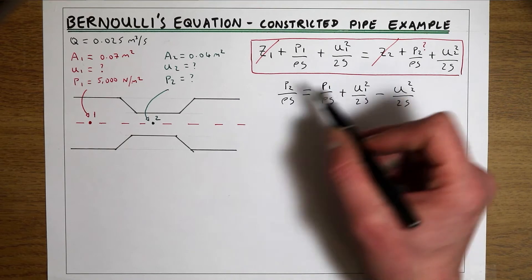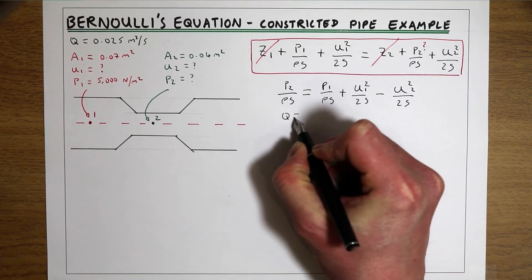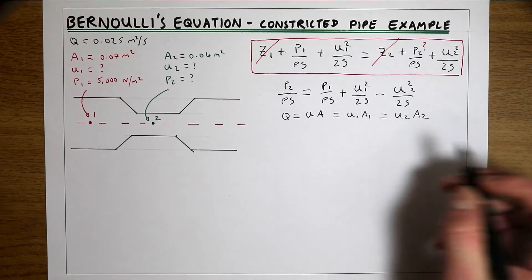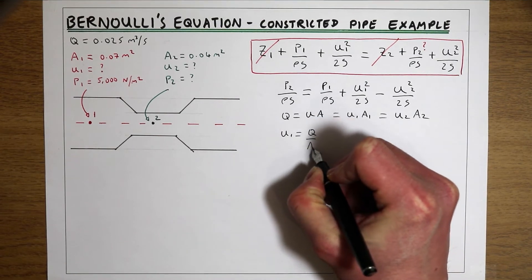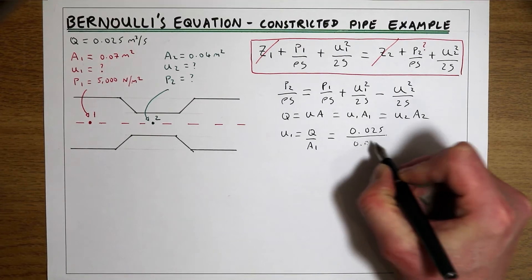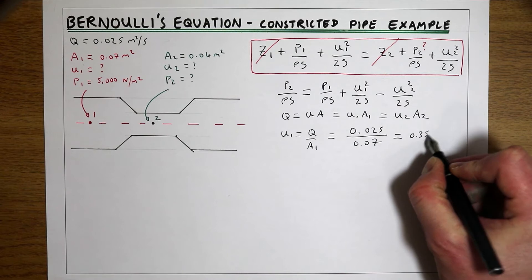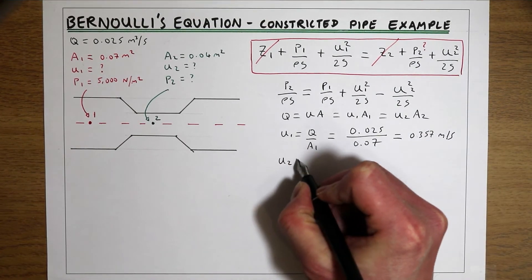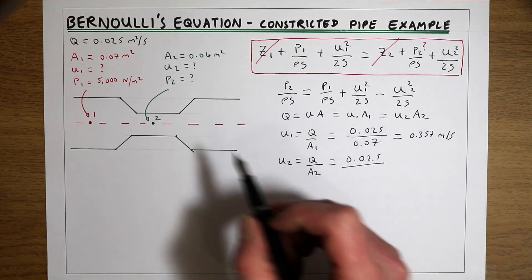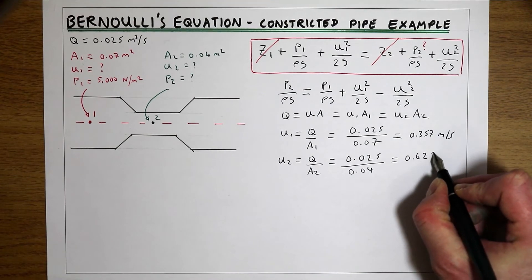We know P1 from the question, but we don't know U1 or U2. We can use the principle of continuity: Q equals UA, which means U1·A1 equals U2·A2. So U1 equals Q over A1. Our Q is 0.025 m³/s and A1 is 0.07 m², giving us a velocity at point 1 of 0.357 m/s.